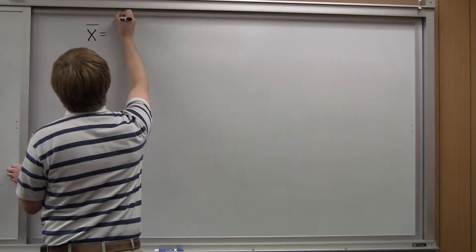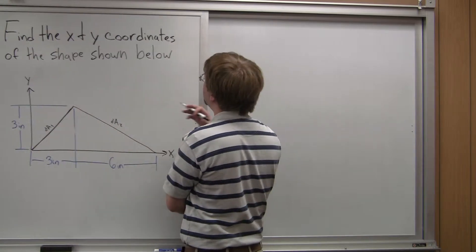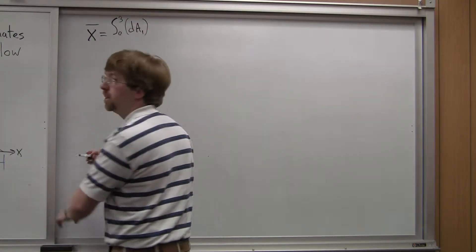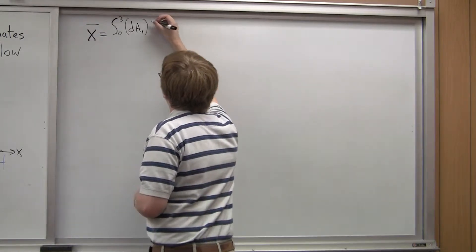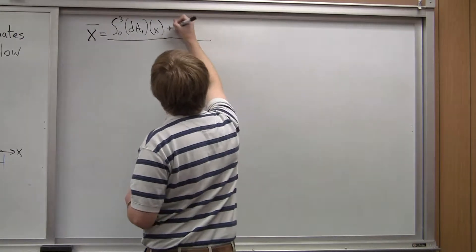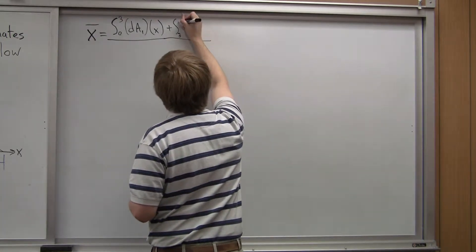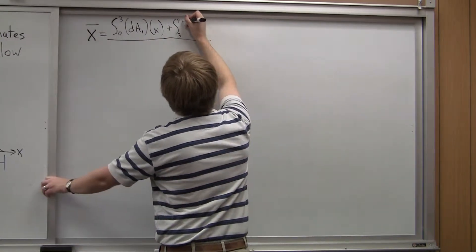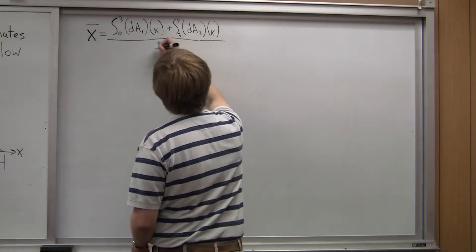For x-bar we're going to take the integral from x-min to x-max, doing the two parts separately. For the first part it's going to be 0 out to 3 of dA1, which is the function describing the height of the triangle at any given value of x between 0 and 3, multiplied by x. Plus the second integral going from 3 out to 9 — that's the second part of the graph — we've got dA2 times x.